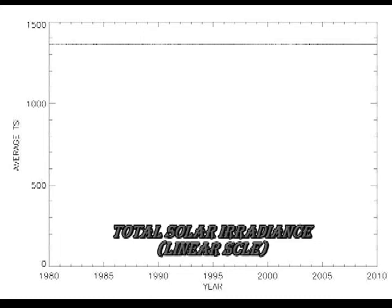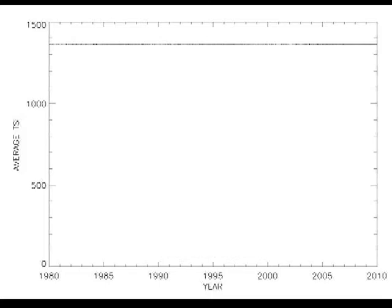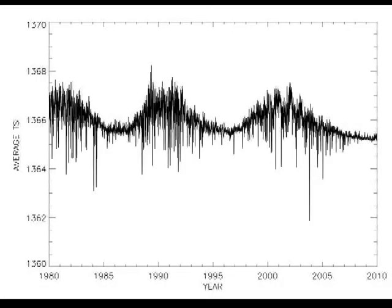Unfortunately, we have only been measuring that for 30 years. Here is a full-scale plot of the total solar irradiance, which is not often shown. Note how flat it is — on the grand scale of things, the Sun hardly changes. No wonder when I was at college it was referred to as the solar constant. However, if you blow the graph up by a factor of 100, you can see the variability which follows the solar cycle. The changes due to the cycle amount to about a tenth of 1% of the overall signal.